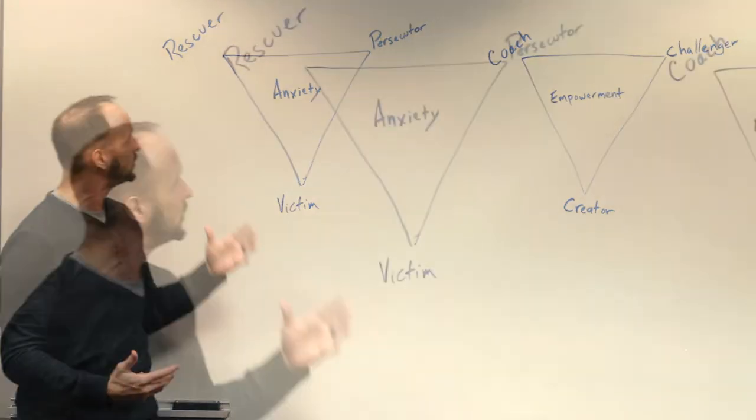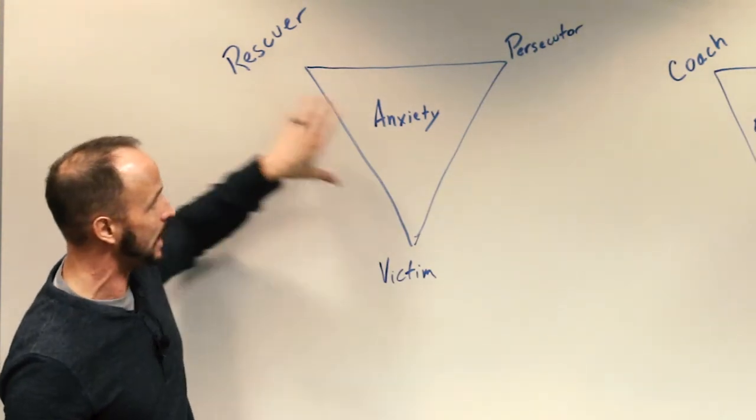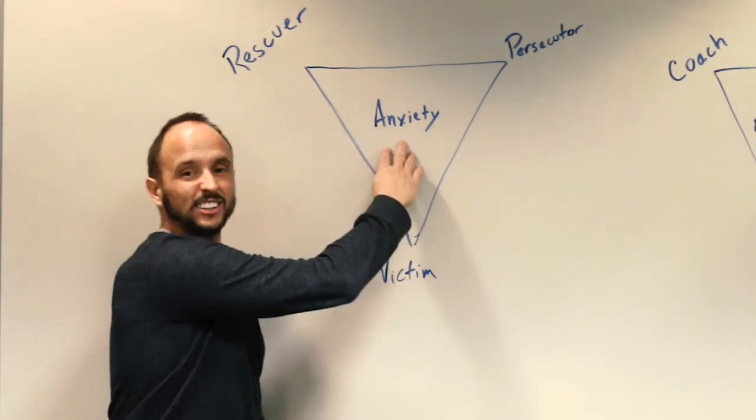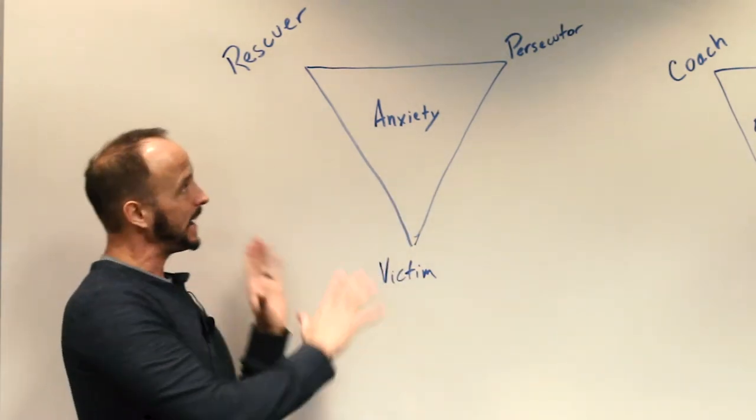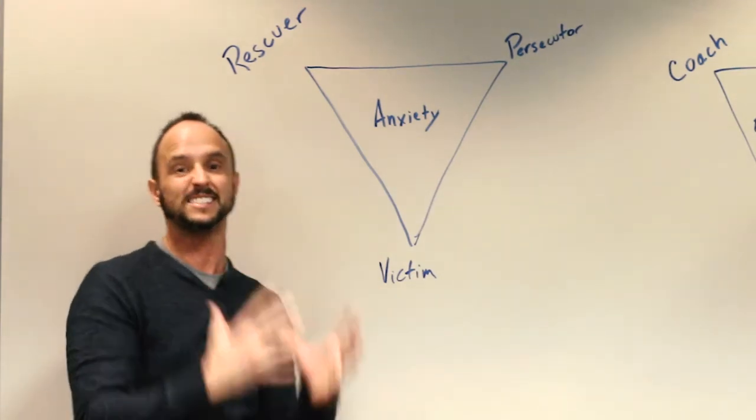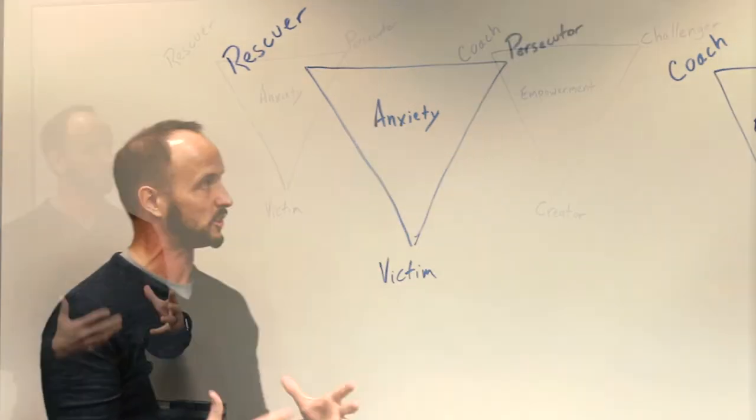They have to help other people. So the victim wants the Rescuer to save them or rescue them from the persecutor, and you've got this triangle. At the center is anxiety and fear, and all three people—the Rescuer, Persecutor, and victim—remain stuck in this difficult, high-conflict situation.